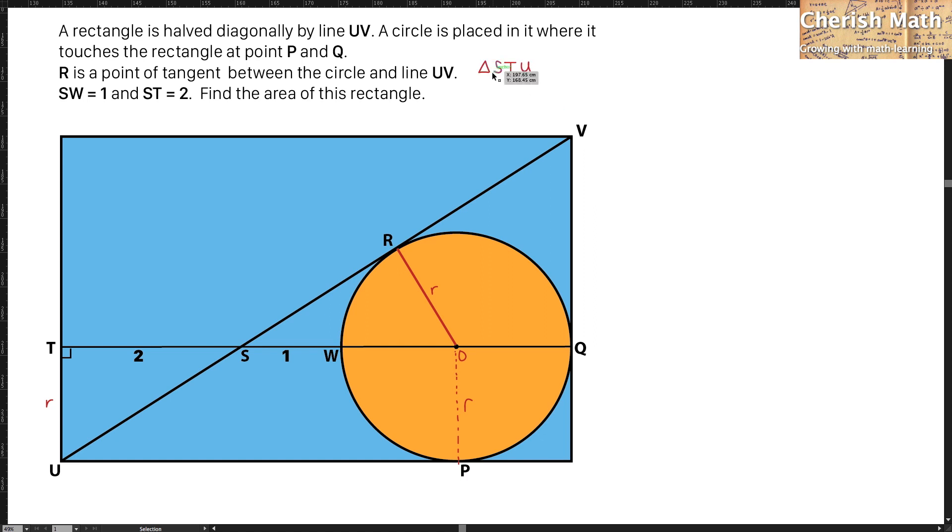For the triangle STU, it is congruent with the triangle SRO. So we can find that for the length of OS, I'm going to highlight this part. It is r plus 1, and it is applied to the length of US, which is r plus 1.